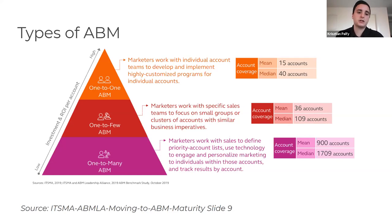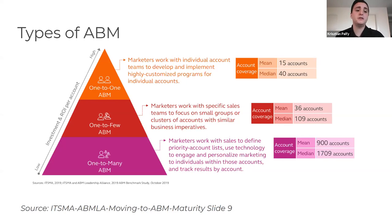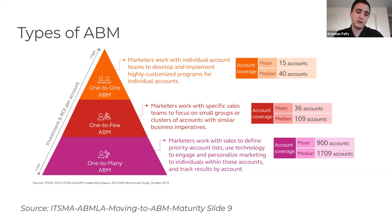As shown on the pyramid, the more you pursue personalization, the higher the investment and return on investment per account. A one-to-one ABM campaign requires higher investment for fewer accounts, while a one-to-many campaign spreads a lower investment across many accounts.